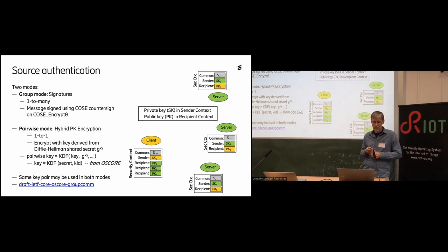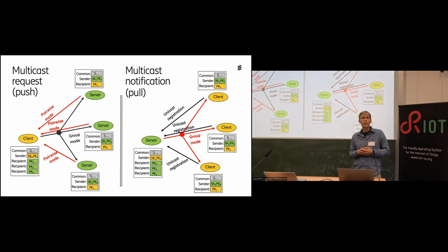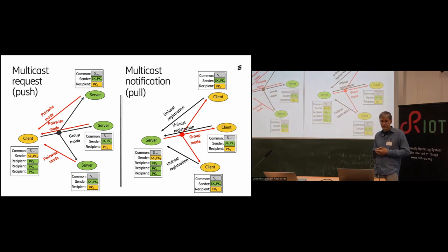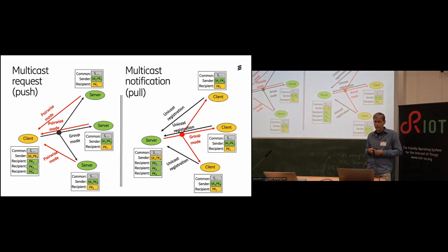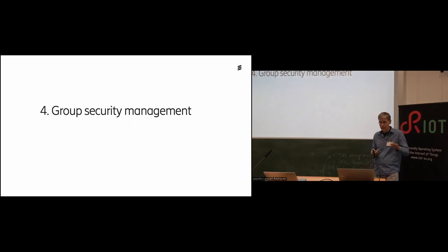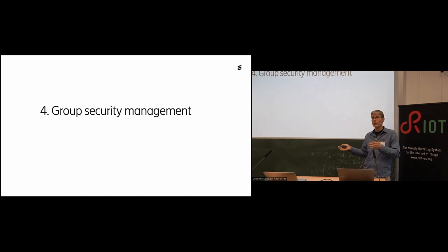Applying this to the push and pull models: for the push model it makes sense to use group mode for the request — signing the message — but for multiple pairwise request-response messages, since a signature is larger than a MAC, it makes sense to use MAC instead to save bandwidth. In the multicast notification case it's the reverse: unicast registrations can use plain unicast OSCORE, and then group mode is used for responses.